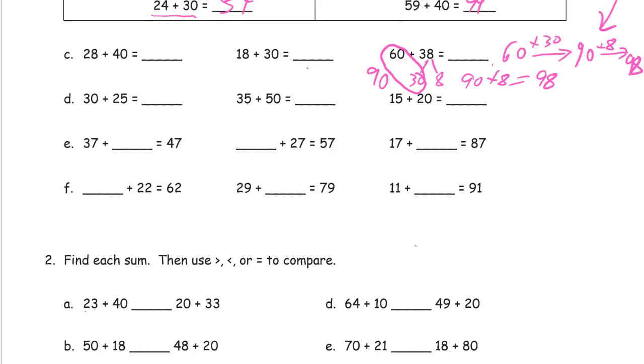But I'm just going to go through these and look at the digits and do it mentally. So we've got 20 and 40, that's 60 with 8 more, 68. 18 and 30, that's a 10 and that's 30, so that's 40 plus 8 more is 48. We already figured this one, 98. We did it twice already. We have 30 and 20, that's 50 and 5 more is 55. 35 and 50, that's 30 and 50, that's 80 and 5 more is 85. 15 and 20, that's 10 and 20, that's 30 and 5 more is 35.